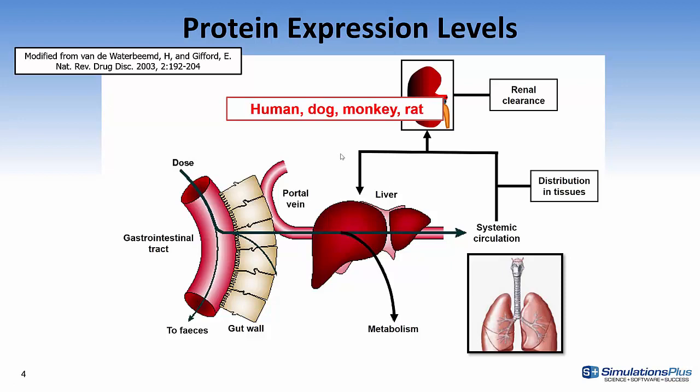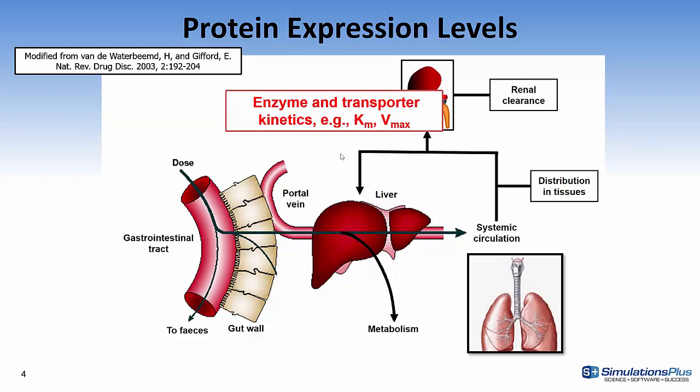Of course, they're different enzymes in the different species — different families and transporters. And the second part of this is you have to have the expression levels, but then you also have to obtain the kinetics, such as KM and Vmax. In that way, you can model the clearance of the compounds.